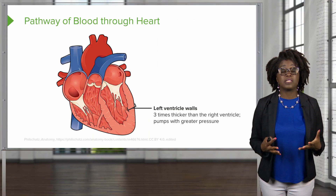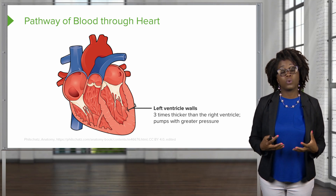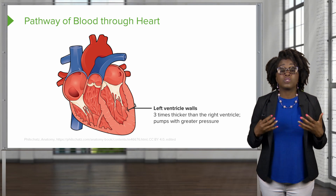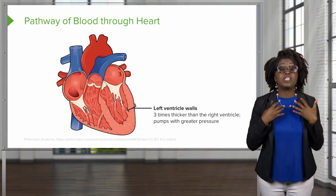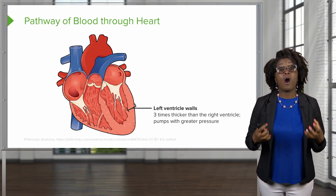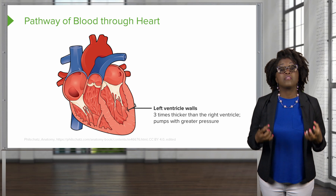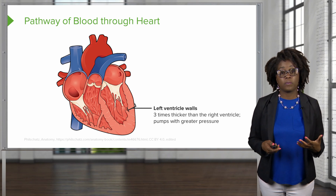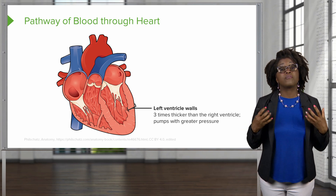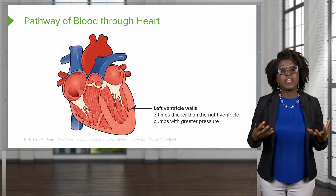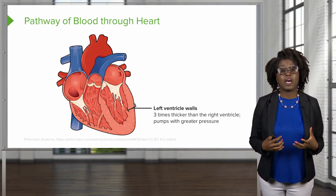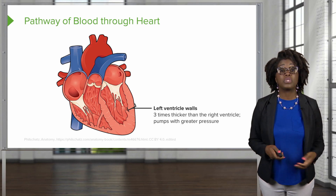Because of this, the anatomy of the ventricles is going to reflect this difference. The left ventricle is responsible for getting blood throughout the whole body, and therefore the walls of this ventricle are three times thicker than the walls of the right ventricle. This allows for the left ventricle to pump blood with greater pressure compared to the pulmonary circuit, which does not need a lot of pressure to get the blood to the lungs.